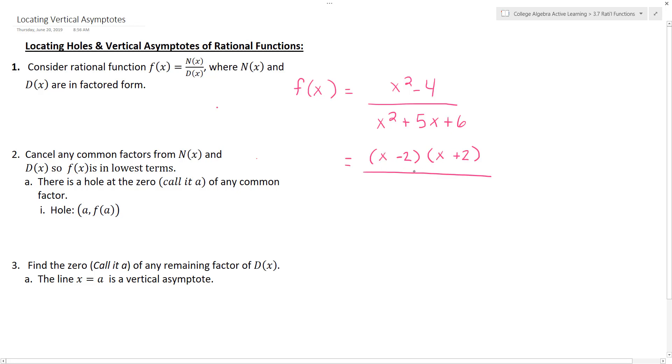That's how we factor the numerator. In the denominator, we're going to also do factoring, but this time it's what two numbers multiply together to give you 6 but add together to give you 5. The answer is 3 and 2, so we get the factors x plus 3 and x plus 2.